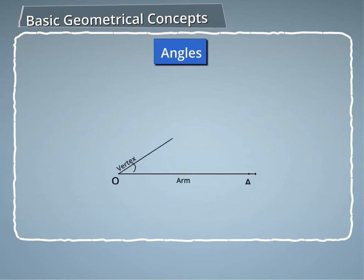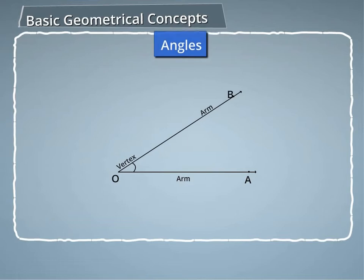Two rays OA and OB starting from the same end point O. The point O is called its vertex and the rays OA and OB its arms or sides.